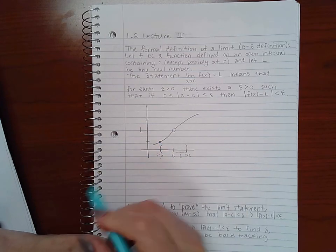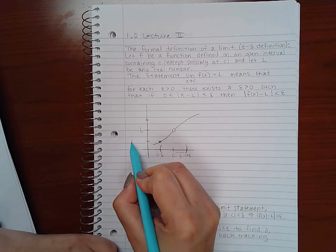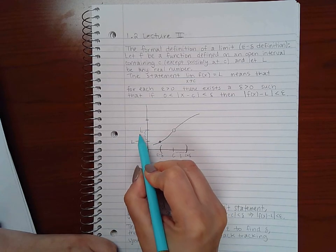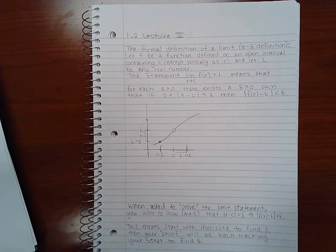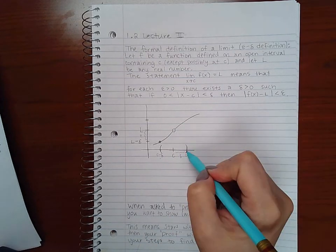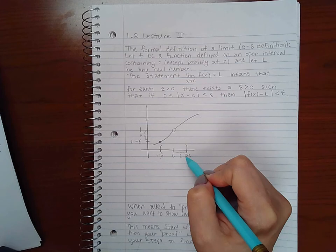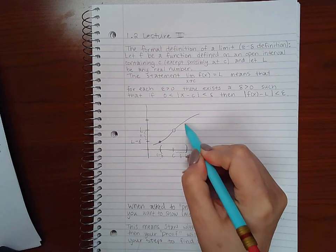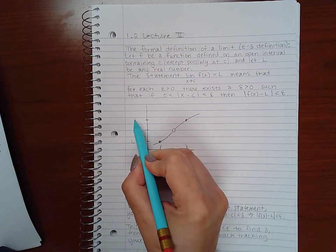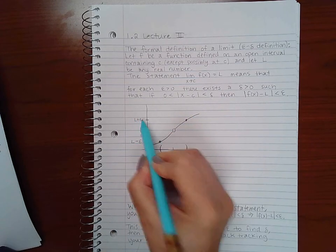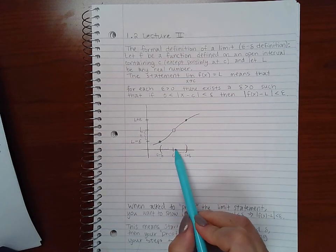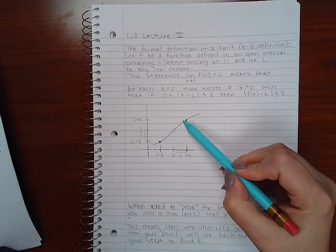Which makes sense because if you look at this C minus delta x value, it has a corresponding y value that's right here, and that y value could be L minus some epsilon, if this is an epsilon difference or epsilon unit. Similarly for C plus delta, you have a y value that is here which could be L plus epsilon.